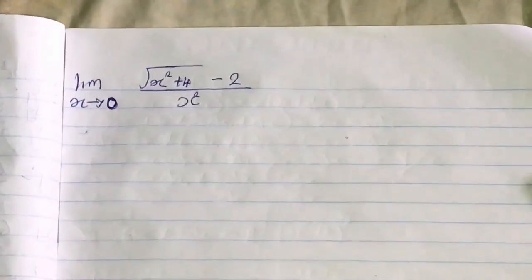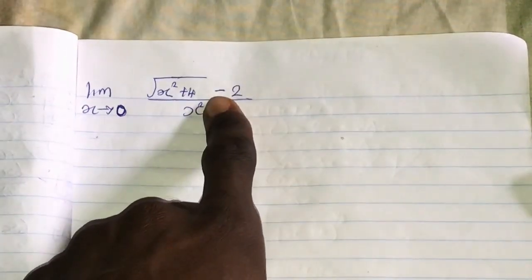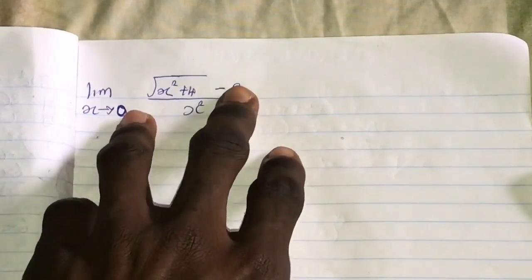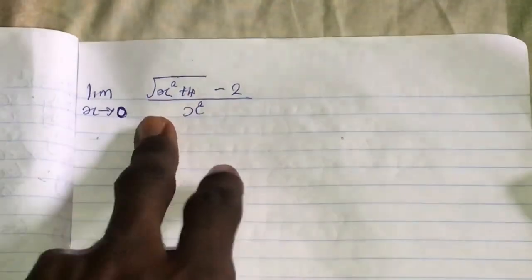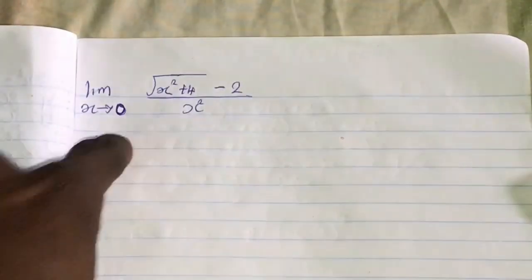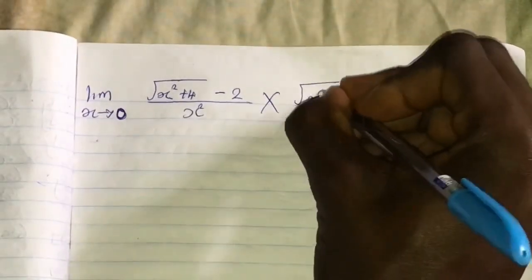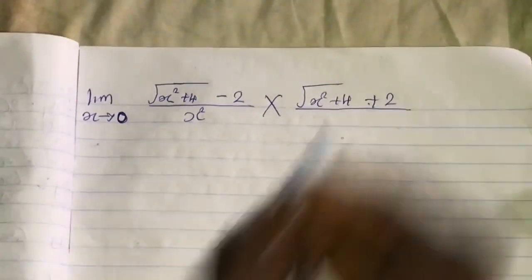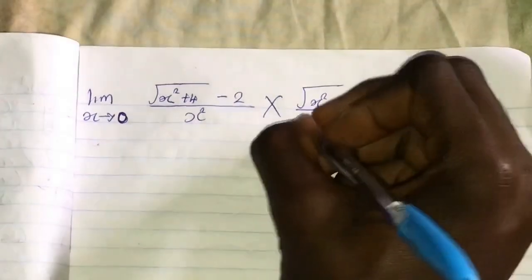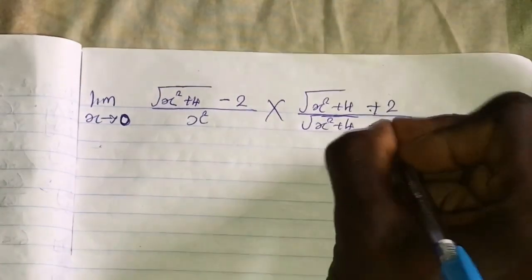So this one is the last one I'll be doing for you today because of time. I want you guys to go ahead and practice on your own too because that's really the way you can know it. So for this, first step is to rationalize it, but this time around we will be rationalizing the numerator not the denominator. This is what you do: multiply this by sqrt(x^2 + 4), then this will be plus 2. Remember, the sign changes when you find the conjugate of both sides.